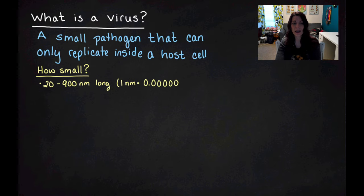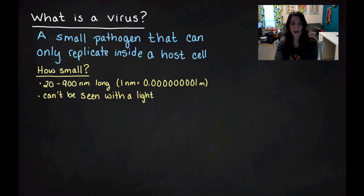It's between 20 and 900 nanometers long. And just for the record, a nanometer is 1 times 10 to the minus ninth meters. So that's very, very small. They're so small that we absolutely cannot see them with a light microscope. They can only be seen with electron microscopes, which we don't have in the lab.